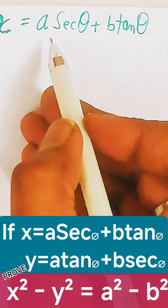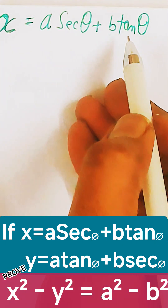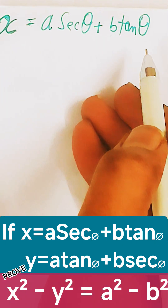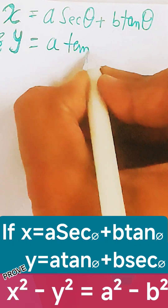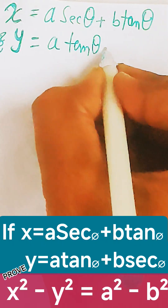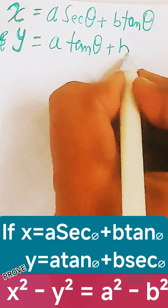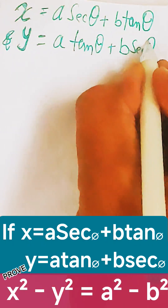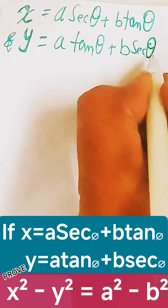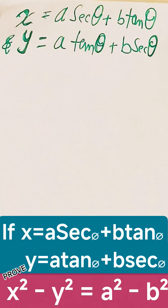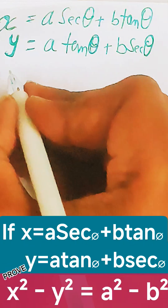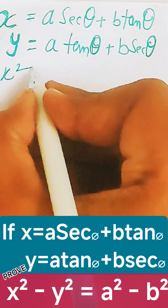It is given that x equals a·sec θ + b·tan θ, and y equals a·tan θ + b·sec θ. This is the data given in the question. Now we need to prove that x² minus y² is equal to a² minus b².